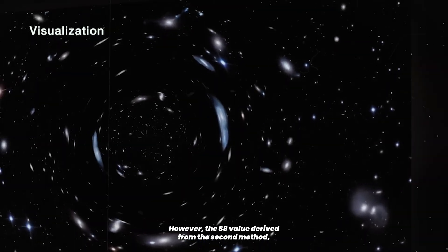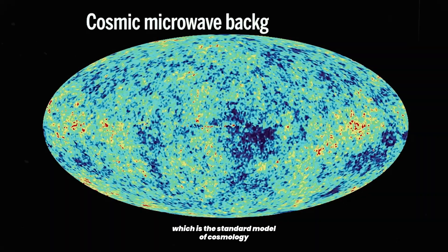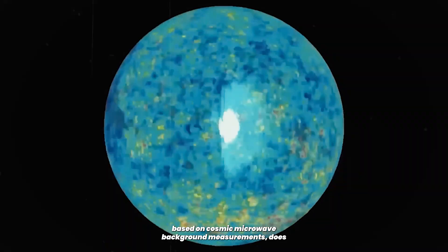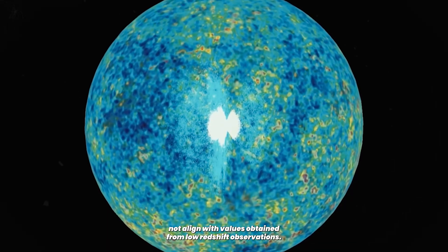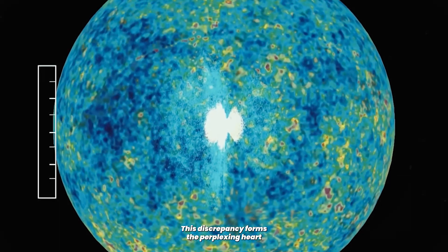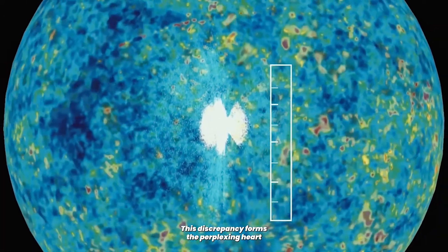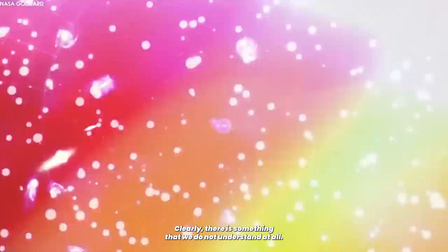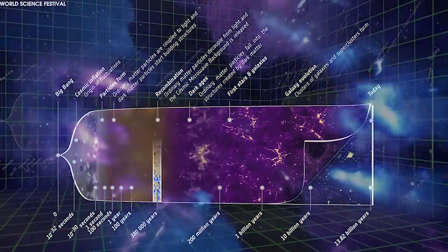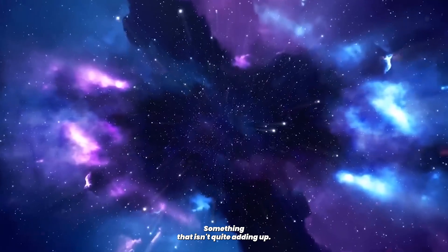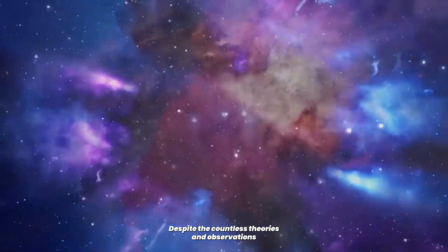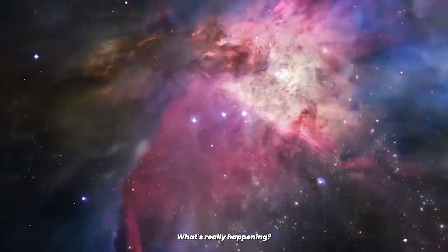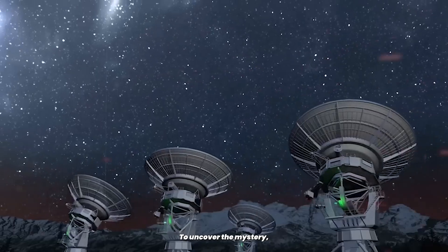However, the S8 value derived from the second method, which is the standard model of cosmology based on cosmic microwave background measurements, does not align with values obtained from low redshift observations. This discrepancy forms the perplexing heart of the S8 tension. Now, what do we do? Clearly, there is something that we do not understand at all. Something that isn't quite adding up, despite the countless theories and observations and hypothetical entities supporting those theories. What's really happening?